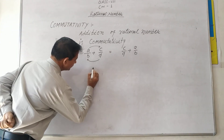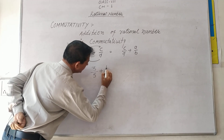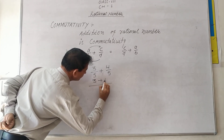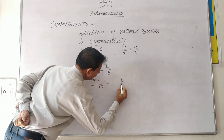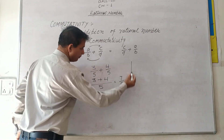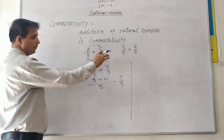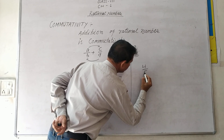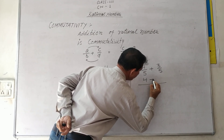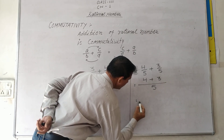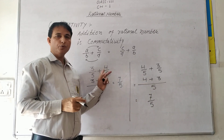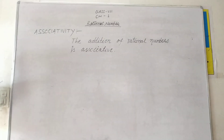For example: 3 upon 5 plus 4 upon 5. LCM equals 5, so 3 plus 4 equals 7 upon 5. Now change the order: 4 upon 5 plus 3 upon 5. LCM equals 5, so 4 plus 3 equals 7 upon 5. In both cases the answer is the same — 7 upon 5. So even after changing order, the answer remains the same. This is the commutative property.